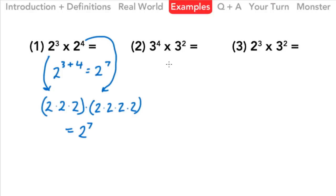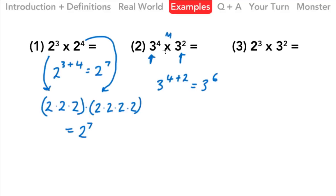We don't really need to show all that work if we remember the rule. The multiplication law only counts if we have the same base. Over here we do: 3 to the 4th times 3 to the 2nd — we just add those exponents, giving us 3 to the 6th power. Remember, we're multiplying the numbers but we're adding the exponents. That's one thing that confuses a lot of people — they end up writing 3 to the 8th power, which is wrong. We've got to add the exponents when we're multiplying the numbers.